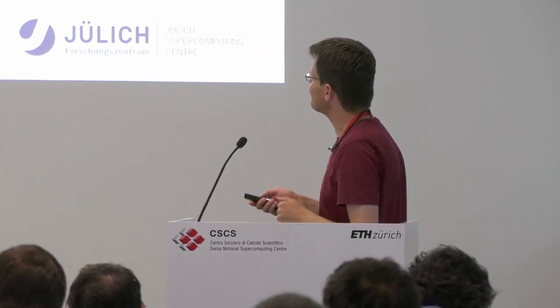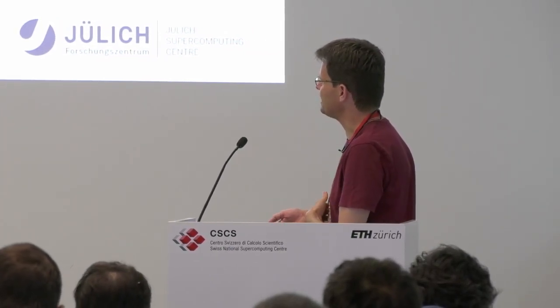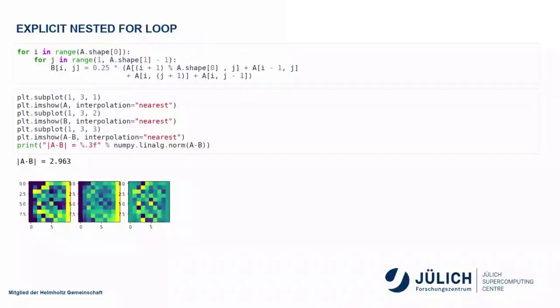If we apply this and plot it, this was our original vector. This is our second iteration, our first iteration, and this is the difference between the two vectors. Here I did the sum of the differences, and it's 2.963 arbitrary units.